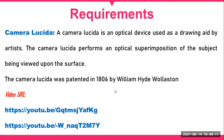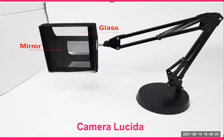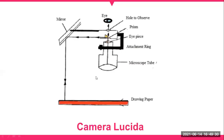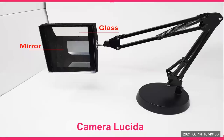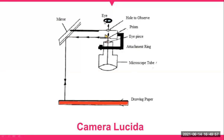In the actual camera lucida setup, the mirror is adjusted and the device attaches to the eyepiece of the microscope. The mirror and glass arrangement allows the observer to simultaneously see the microscopic object and the drawing paper below, enabling tracing of the observed image.